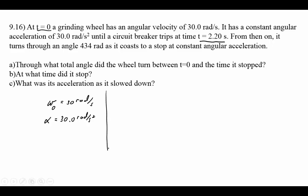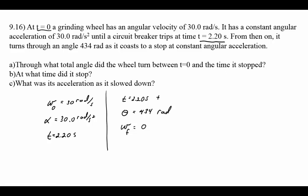The problem is split into two parts. At t equals 2.2 seconds, the motor stops and the grinding wheel begins to slow down. From then on it turns through an angle of 434 radians — so from t equals 2.20 seconds onward, theta has a value of 434 radians — and then it finally comes to a stop, so omega final equals zero. In the second half it's gone through 434 radians, so we need to find what happened during the first half.